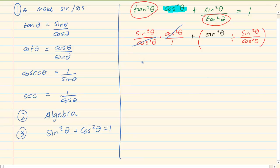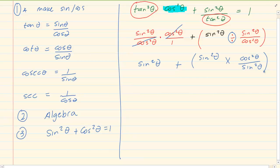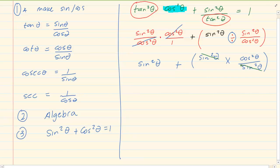We're not changing the question but writing it so that it is more comfortable for us. The cos squared can cancel with the cos squared at the bottom — that's in the first term. So I'm left with sin squared theta, plus we have sin squared theta, and when you take a division and make it a multiplication the right-hand side fraction swaps around. So I have cos squared theta over sin squared theta. The sin squared can cancel with the sin squared. I am now left with sin squared theta plus cos squared theta, and we know sin squared plus cos squared is equal to 1.